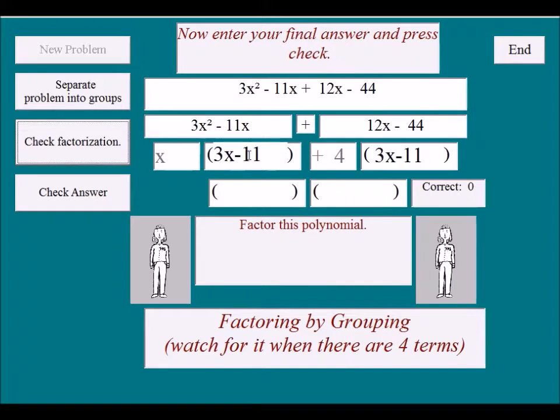Now what we have to do is something that's a little sophisticated. This is where your eyes have to be opened. We have two groups, this group and this group, and they have something in common. What is it? It's the 3x minus 11. See, there's a 3x minus 11 here and there's a 3x minus 11 here. It's common to both groups.